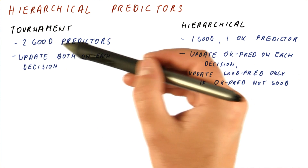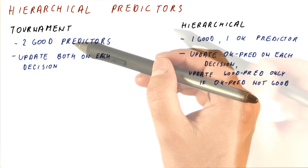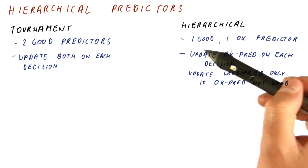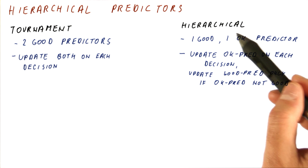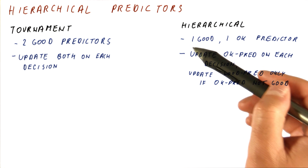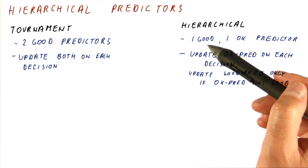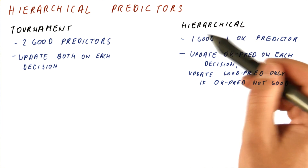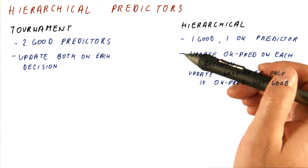In a tournament predictor, each of the predictors is a balance between cost and accuracy. In a hierarchical predictor, you can build a very expensive predictor with very few entries, and an okay predictor that has a lot of entries. So most branches get handled by the okay predictor, which leaves the rest of the resources for the good predictor — meaning it can have extremely long histories or be a very fancy predictor. You can even have a hierarchy, or a tournament, with more than just two predictors.